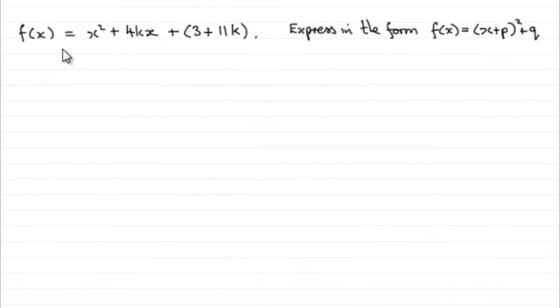Now, for the first part of this question, we're given that f(x) equals x squared plus 4kx plus all of 3 plus 11k, and asked to express it in this form, f(x) equals all of x plus p squared plus q, where p and q are going to be functions of k that we need to work out.